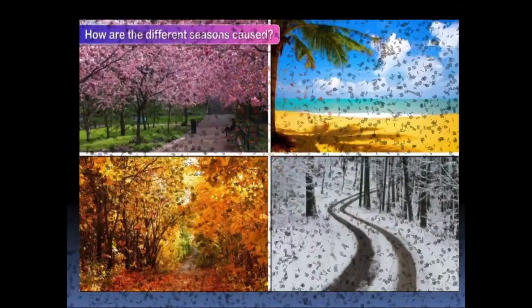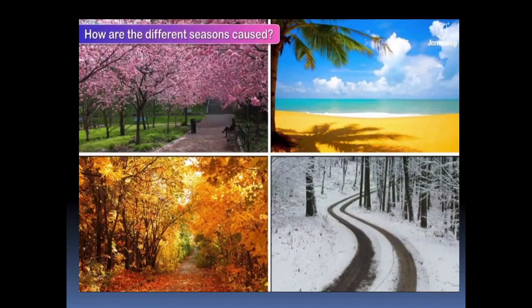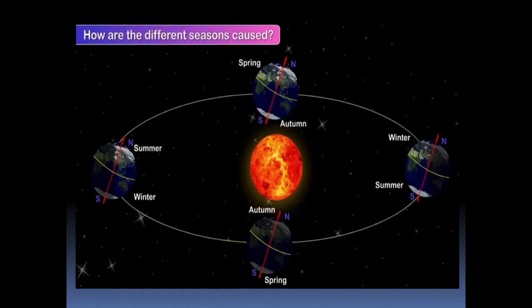Now, let's learn about how different seasons are caused. Different seasons like spring, autumn, summer and winter are caused by the revolution of earth around the sun.